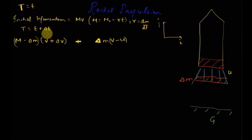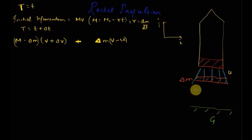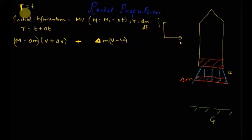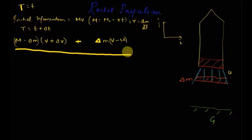At time t plus delta t, the momentum of the remaining rocket mass is (M − δm)(v + δv) and the momentum of the ejected gases is δm(v − u). No external force acts on the system, because we have taken the ground as part of the system — so the weight of the rocket and the ejected mass becomes an internal force. Hence, the total linear momentum of this system remains conserved. The momentum at time t was Mv, and at time t plus delta t is this whole term, so we can write them equal to each other.